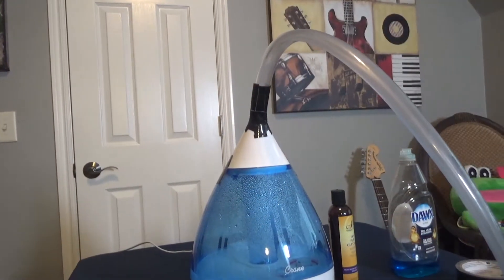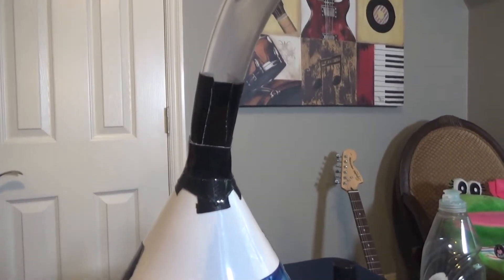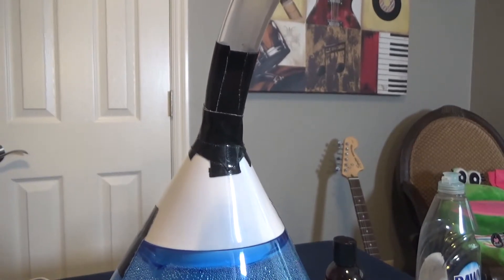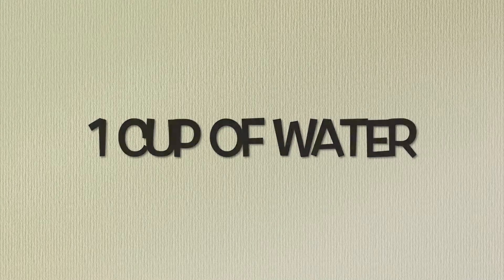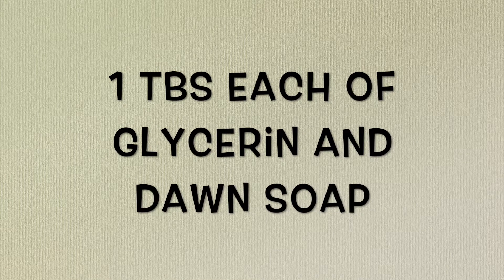You will tape the end of the rubber hose to the top of your humidifier, or wherever the mist is emitted. Now to make your bubble solution, all you'll need is one cup of water, one tablespoon of glycerin, and one tablespoon of dishwashing soap. But this is the opposite of a James Bond martini — be sure you don't shake it; be sure to stir it. Let it sit for 24 hours, and you are ready to make some bubble clouds.